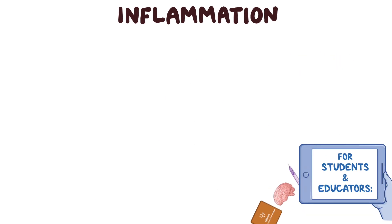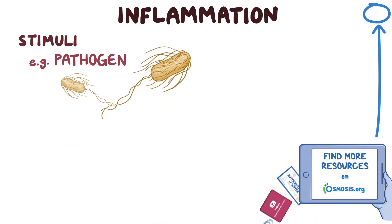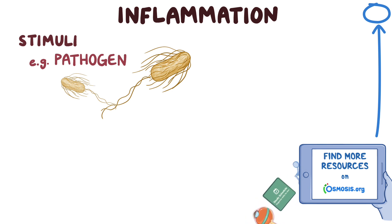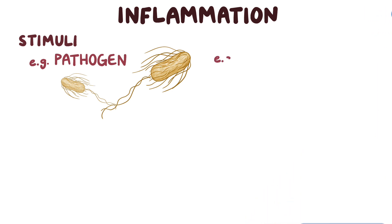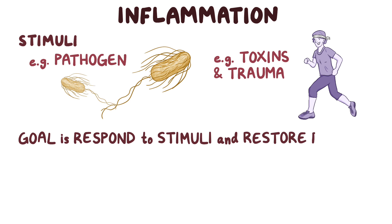Inflammation usually starts with some stimuli, like a pathogen. Even though pathogens are a common cause of infection which can lead to inflammation, inflammation can be caused by other things as well, like toxins and trauma. For example, after an intense workout your muscles might feel sore — that's due to inflammation trying to repair your overused muscle fibers. Ultimately, the goal of inflammation is to respond to the stimuli and restore balance.